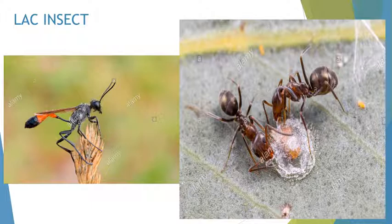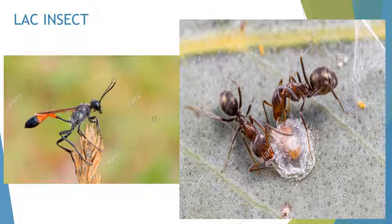Next one is the lac insect. Lac insects usually grow on banyan trees. They secrete a semi-solid substance called lac. Lac is used in paints, varnishes, printing inks, and for making bangles and similar things.